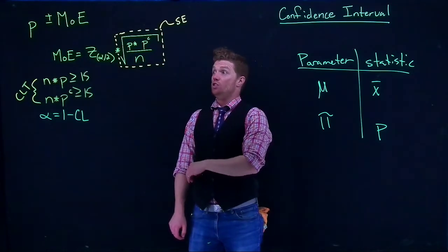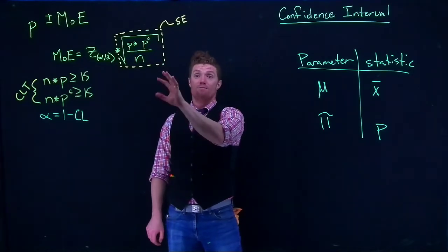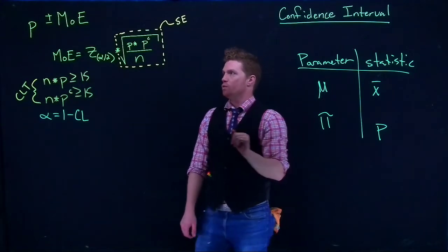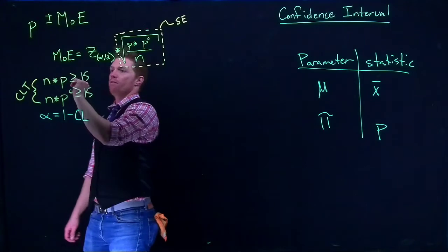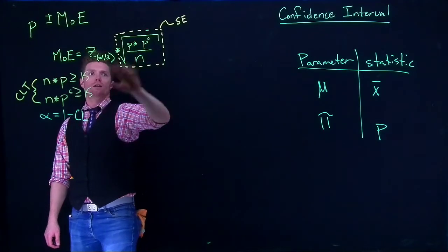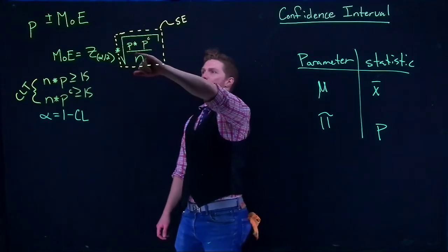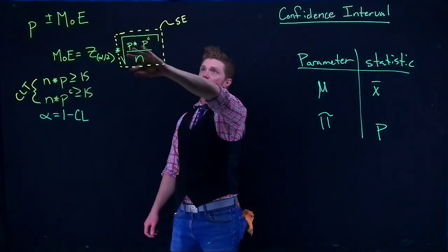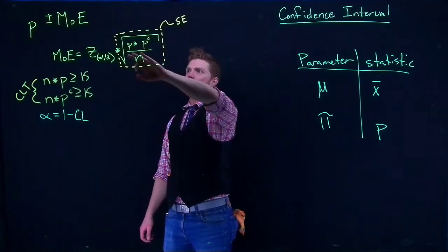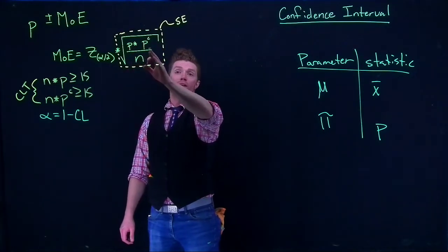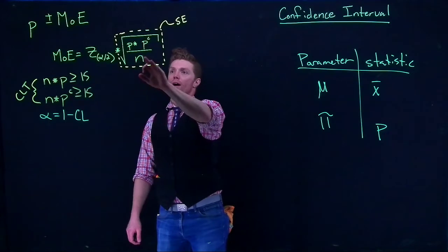Once we do that though, it's the exact same methodology as we used with our means. We take the sample proportion that we have, plus or minus the margin of error. This is how we get our margin of error: the z-score and our standard error here, which is the square root of the sample proportion times the complement of the sample proportion, all divided by N.